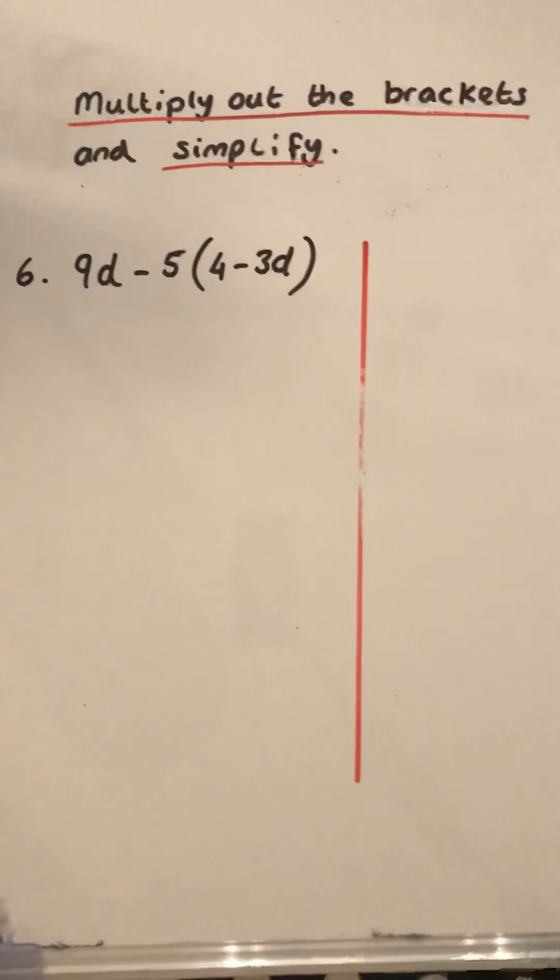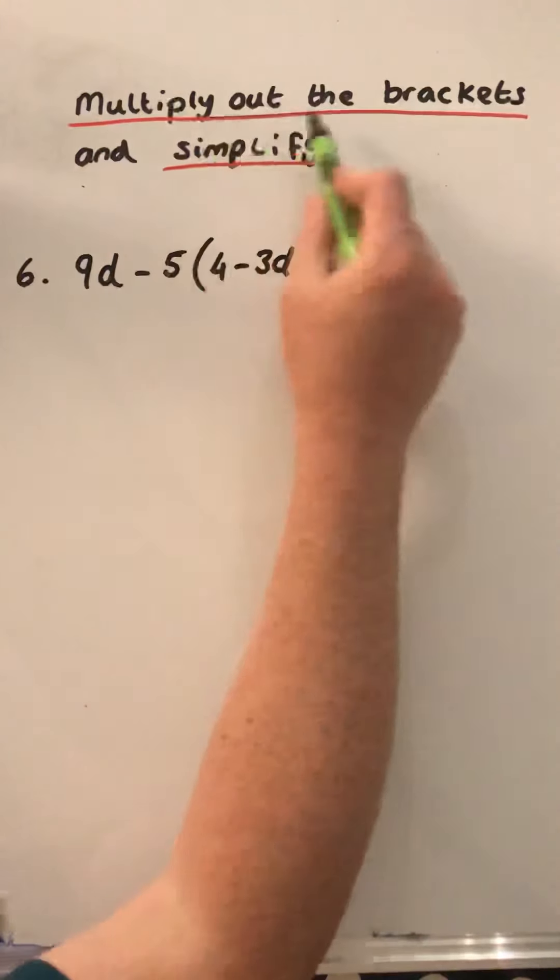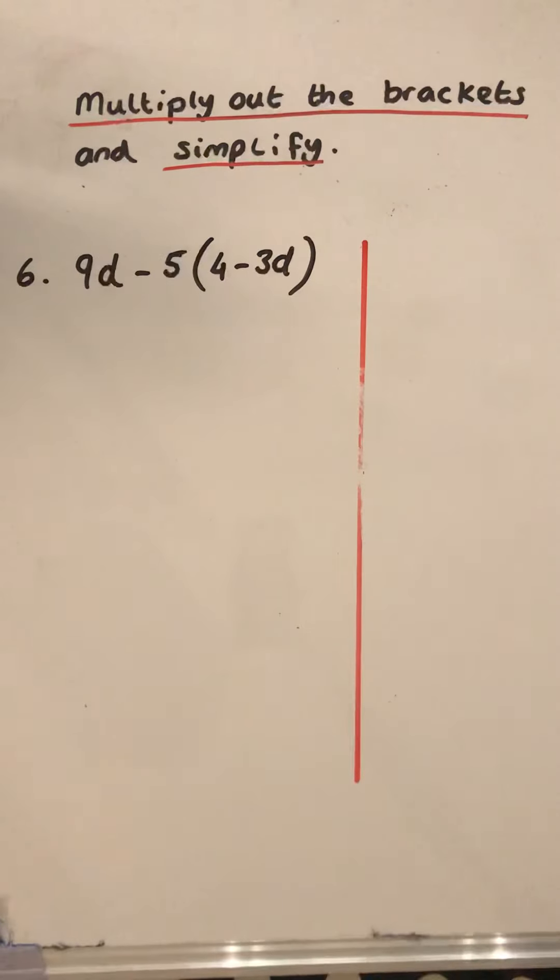Hello and welcome to another lesson with Mr Burns. In this lesson we are going to do question number six where we are being asked to multiply out the brackets and write in its simplest form. So you'll notice this one has just got a slight difference again but the same rules still apply.